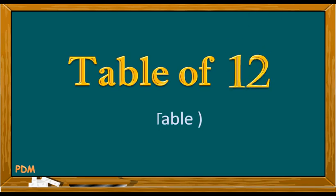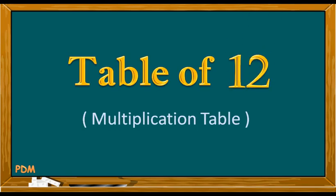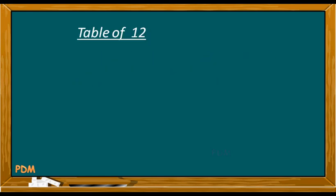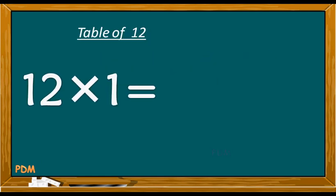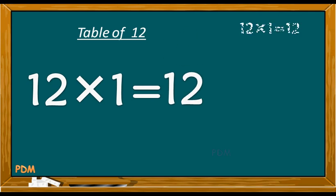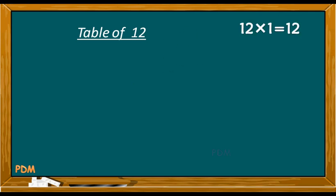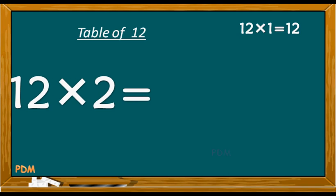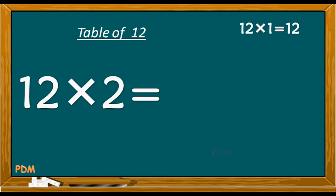Table of twelve. Twelve ones are twelve. Twelve twos are twenty-four.